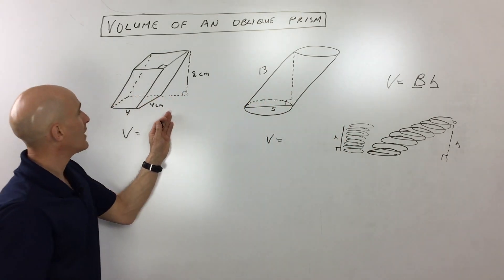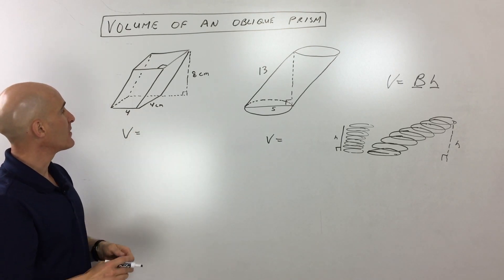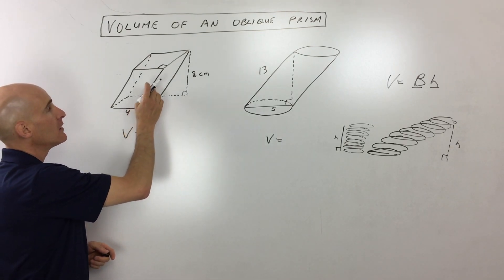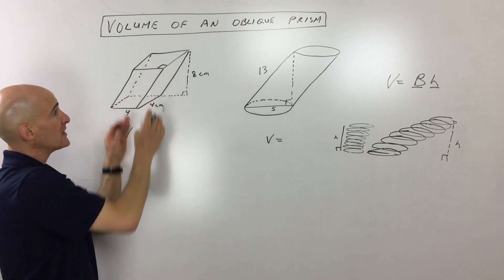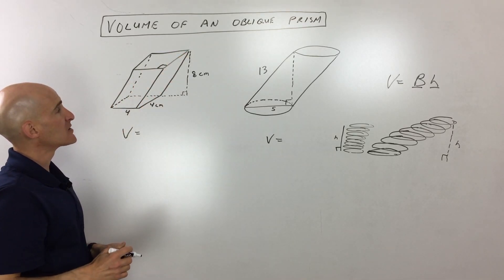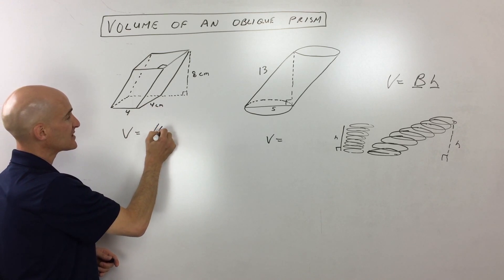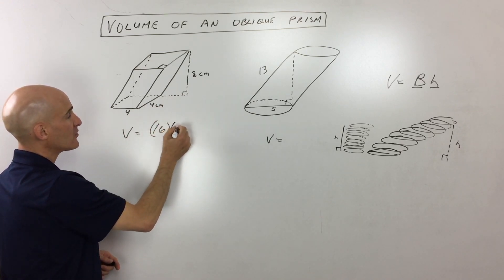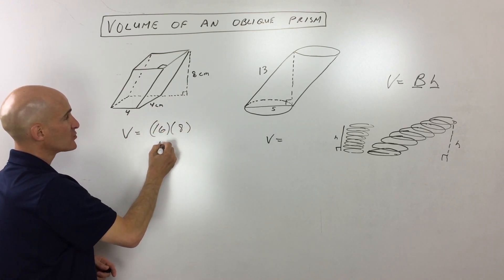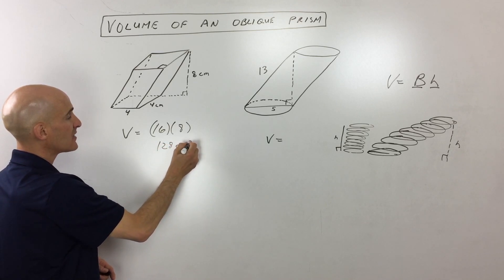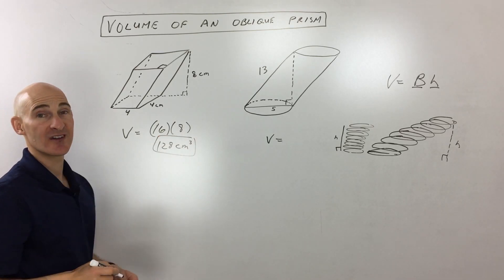So let's go over now to this diagram here. So we've got a square prism, but it's oblique, it's on an angle like this. And so what we're going to do is we're going to find the area of the base, which is four times four, that's 16, times the height, which is eight. And so that comes out to 128 centimeters cubed.